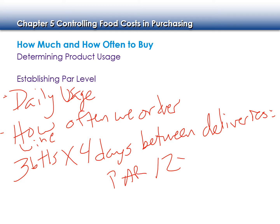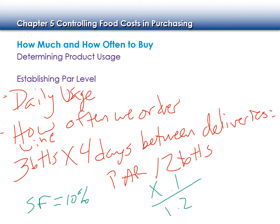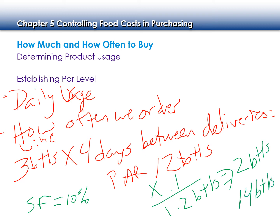Our par, which is the minimum amount we need on hand in order to operate, is 12 bottles if there are four days between our deliveries. Some days we might use more than three, some days less — three is our average daily usage. We can also include a safety factor, typically in the form of a percentage. If we multiply by 0.1, that means we need a safety factor of an extra 1.2 bottles. We would round that up to 14 bottles of wine to include that safety factor.